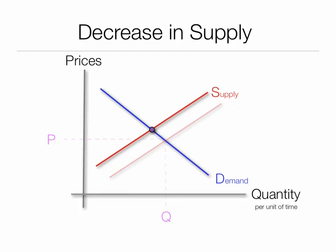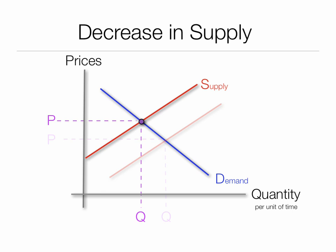A decrease in supply means the entire curve shifts up and to the left. What happens is there are market forces that begin to pressure prices to rise. Also, less quantity will be consumed at higher prices.